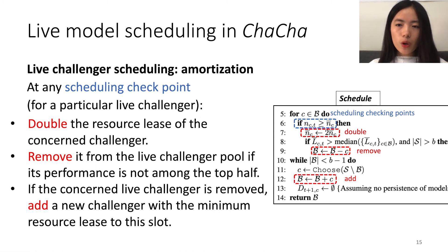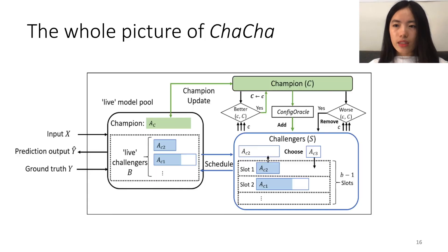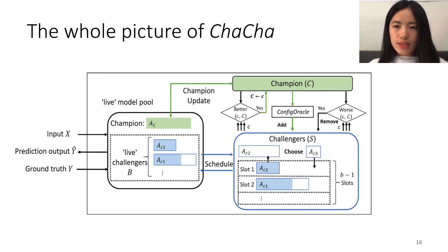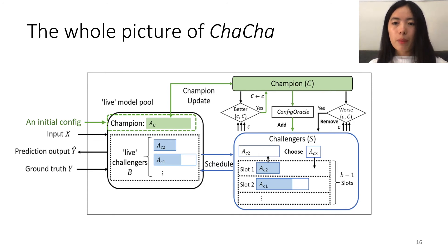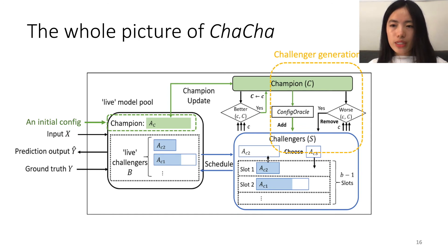With these three major components introduced, let's take a look at how the whole ChaCha framework works. We start from an initial configuration, set it as the Champion, and the Configuration Oracle will be triggered, because the very first Champion is also considered a new Champion. The Configuration Oracle will then generate a set of Challengers based on the current Champion.